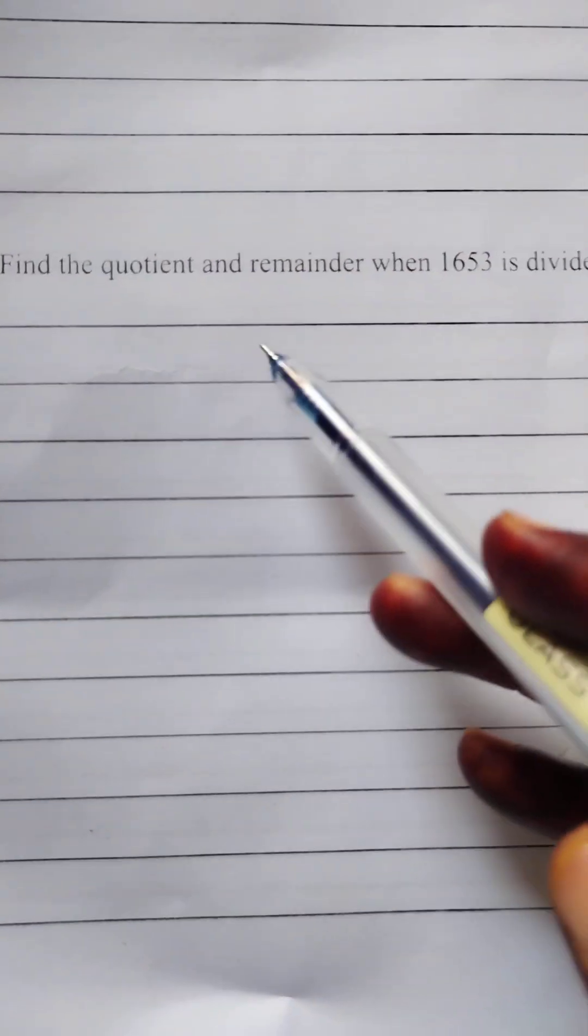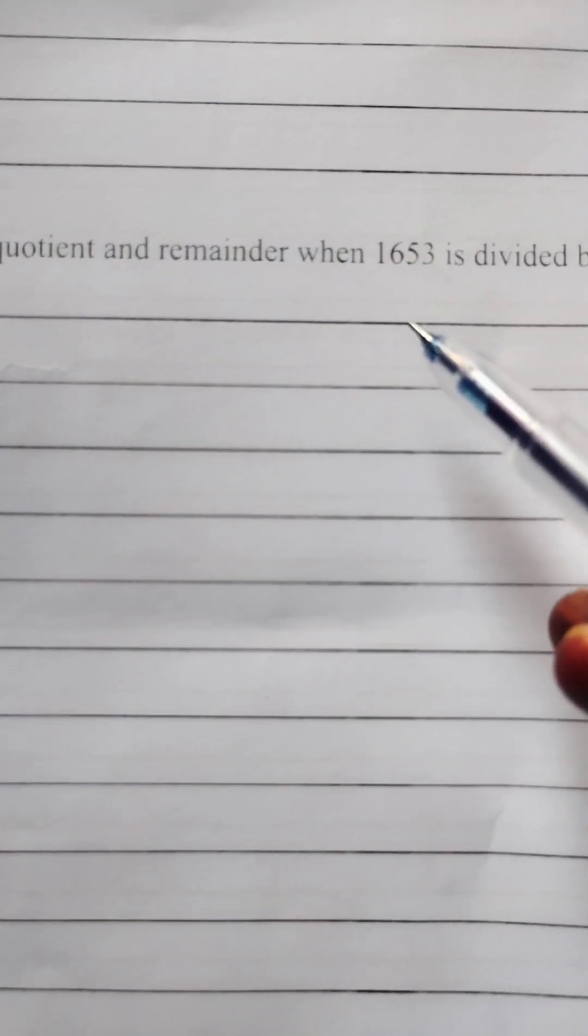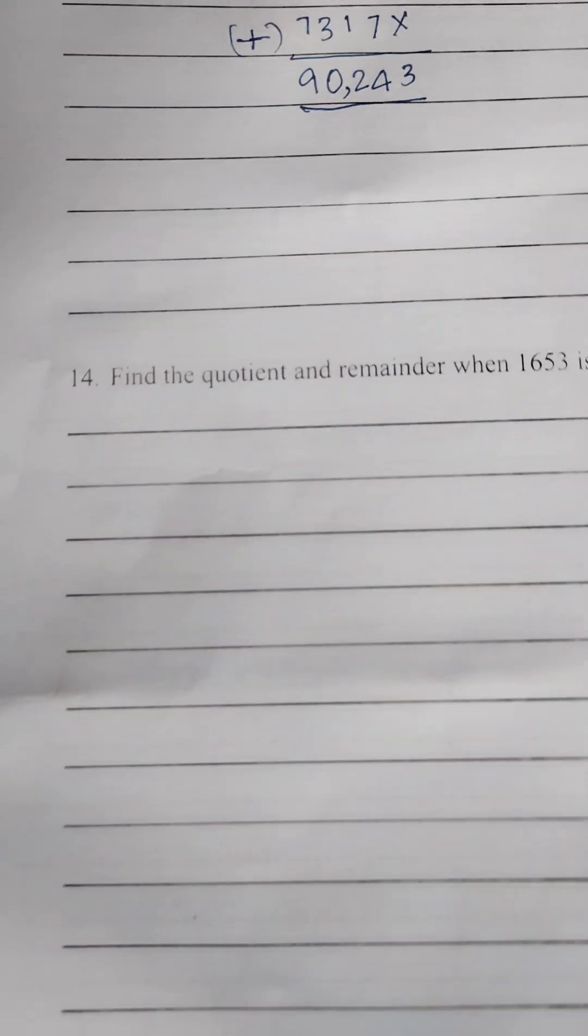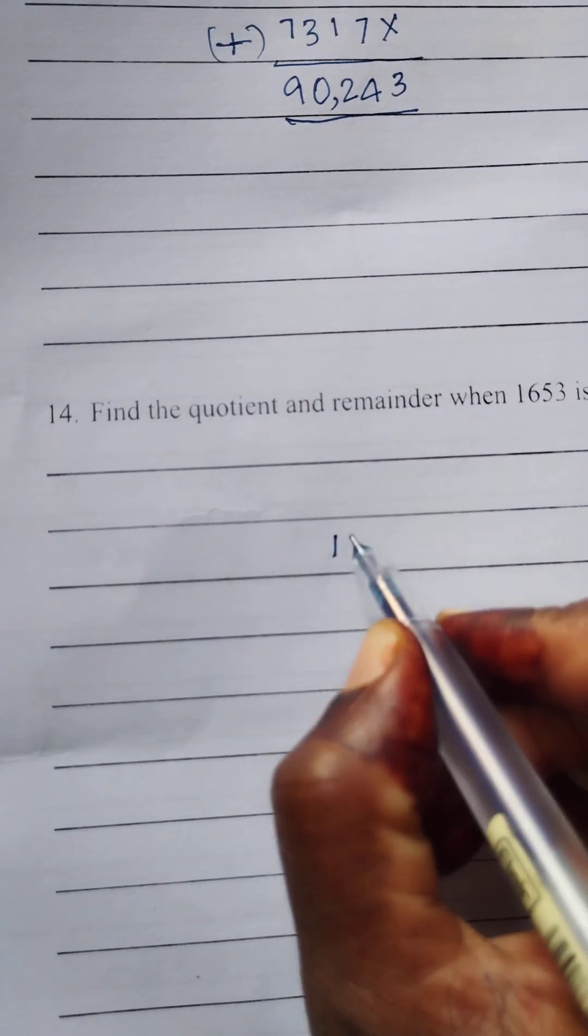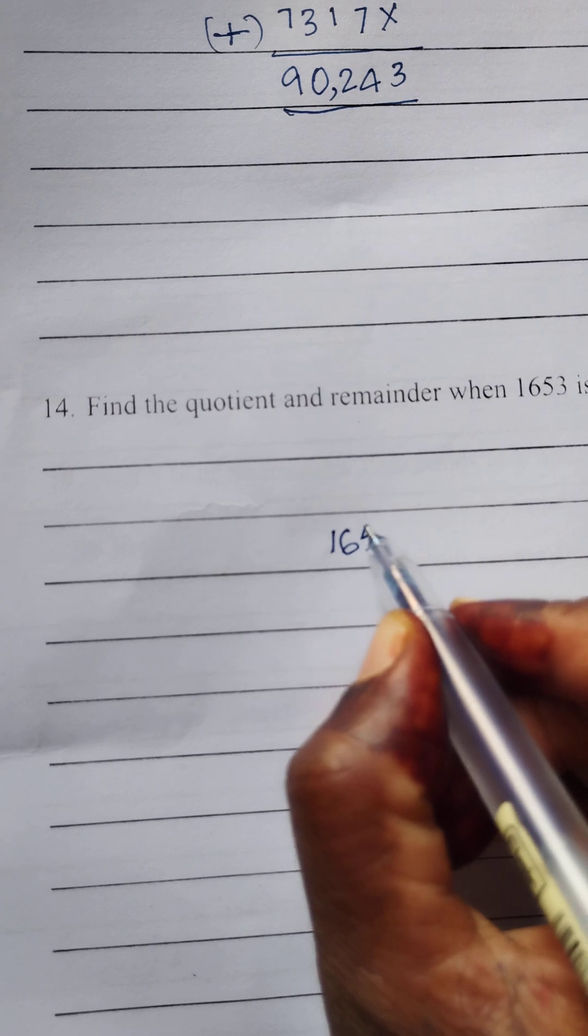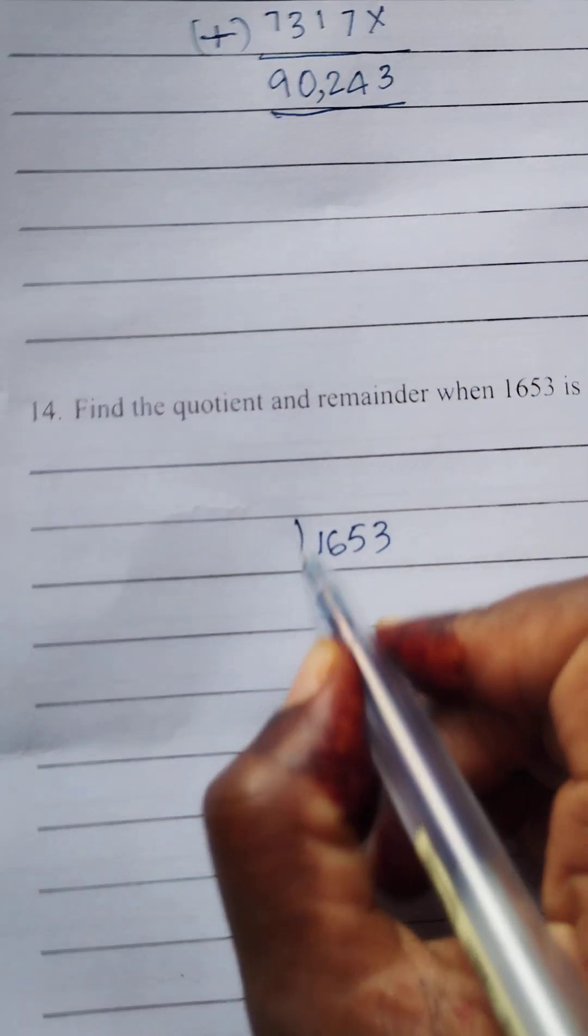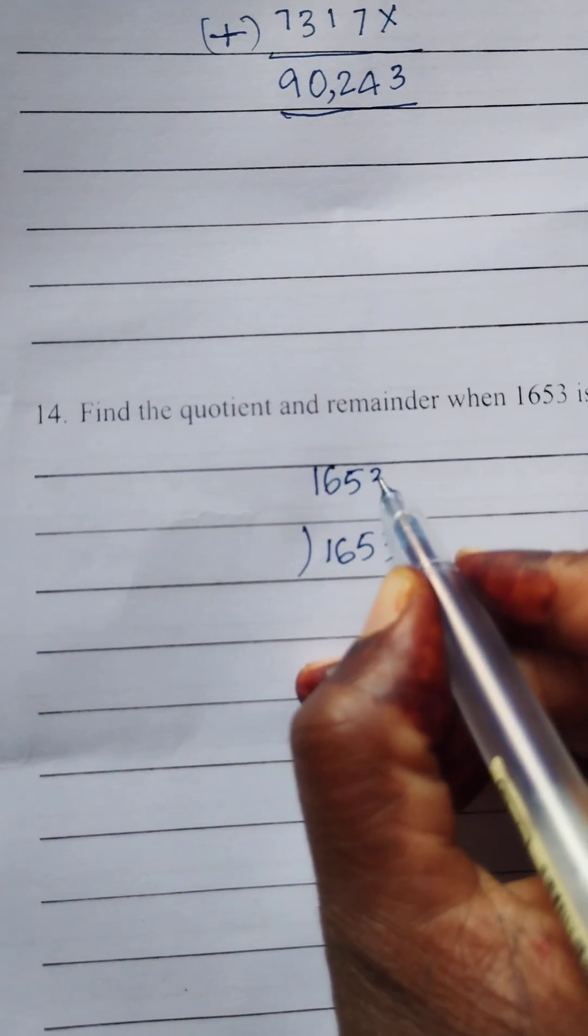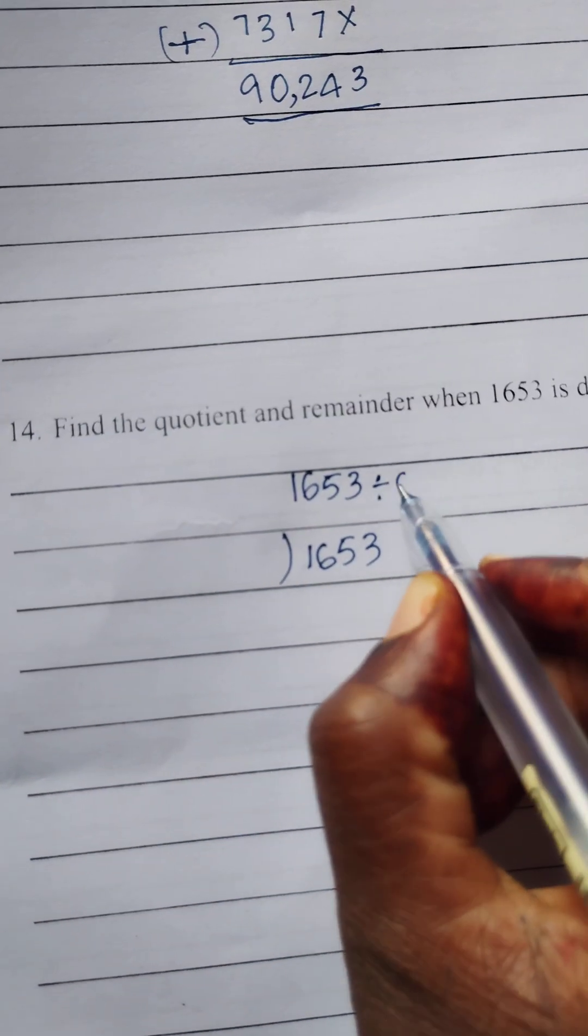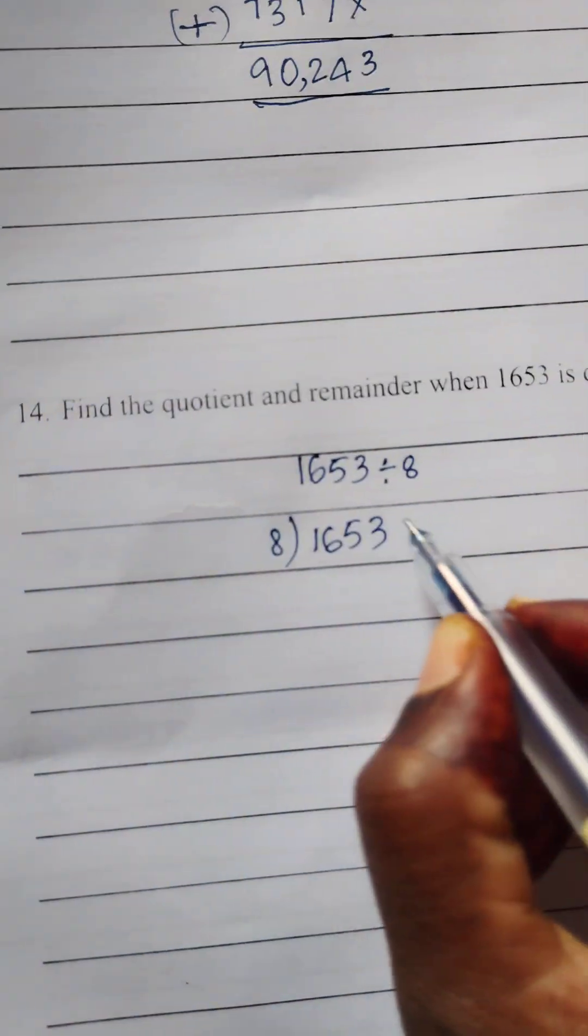Next we have second question. Find the quotient and remainder when 1653 is divided by 8. You can do now. 1, 6, 5, 3 divided by 8 now. So you can write like this. 1653 divided by 8. You can write 8 here.